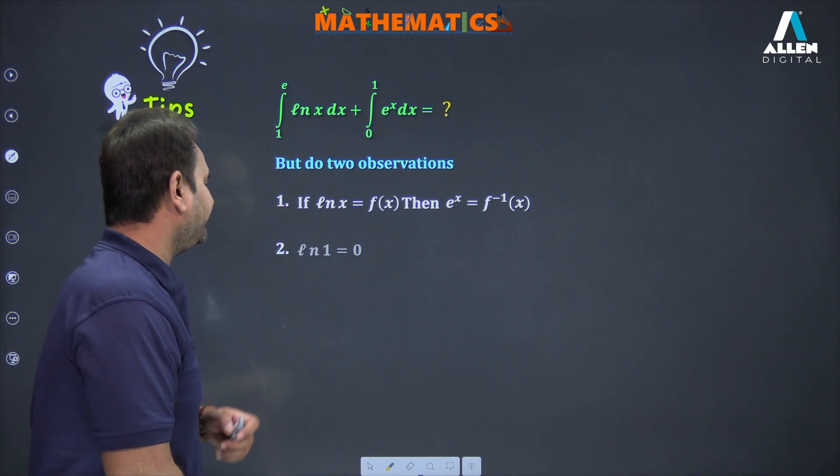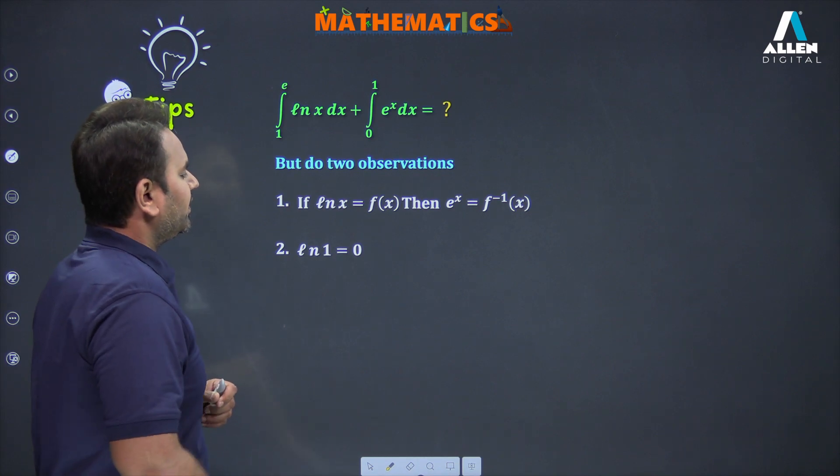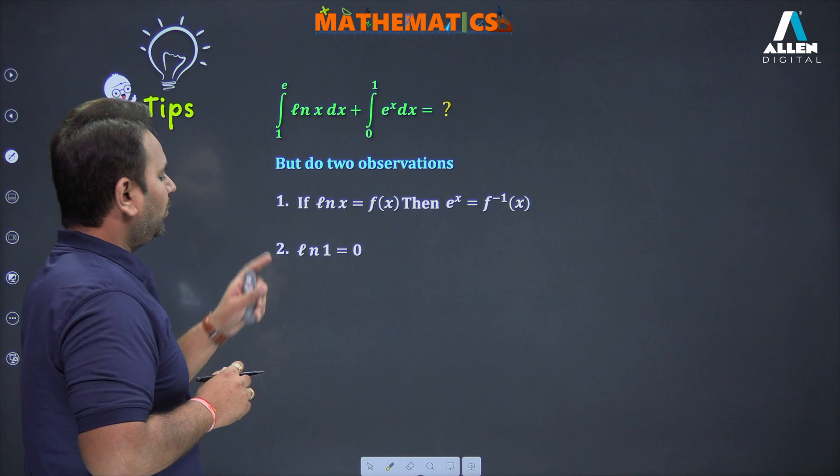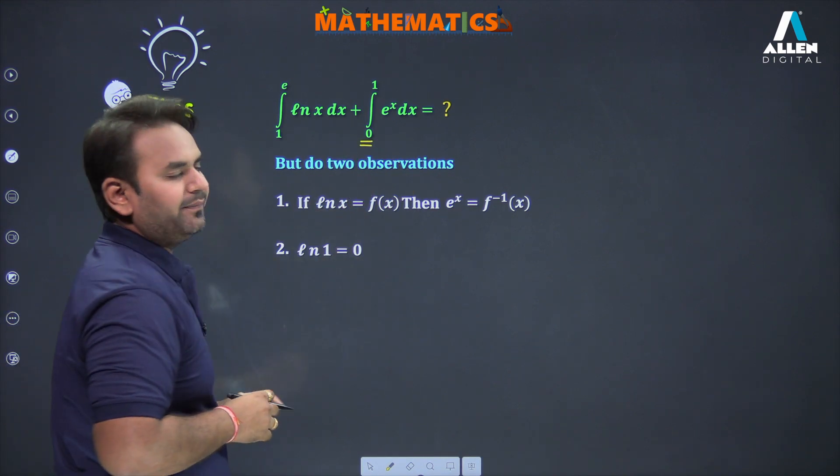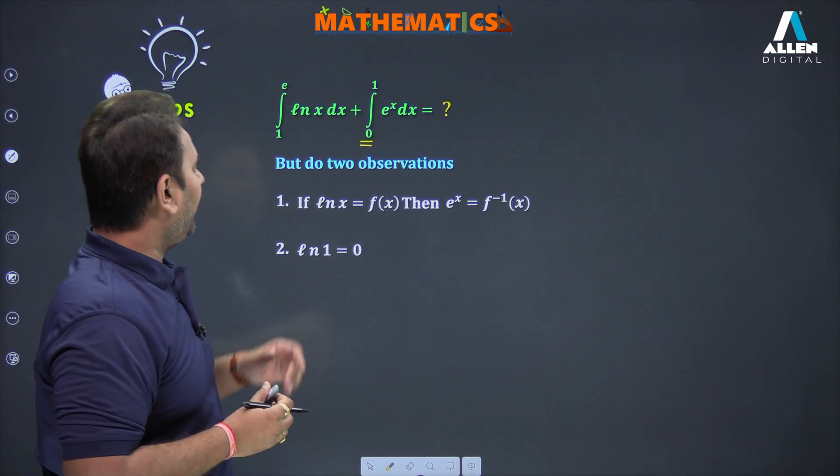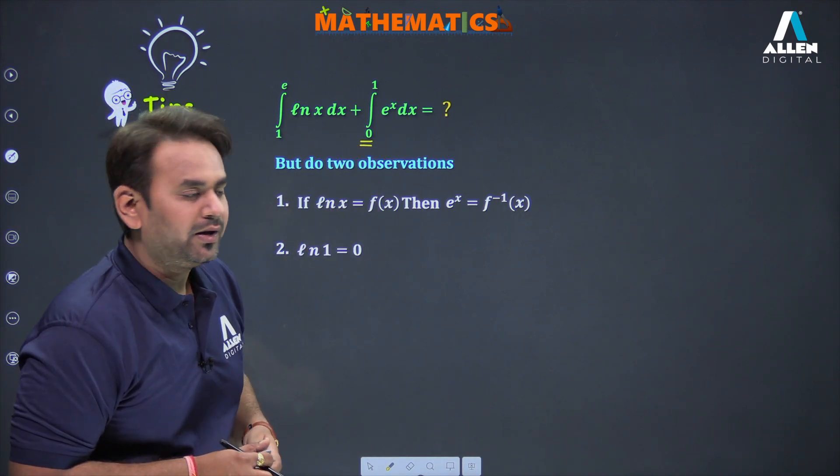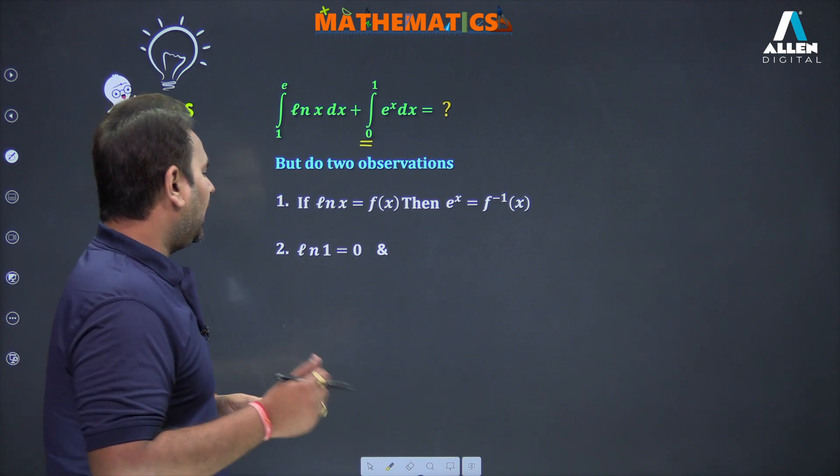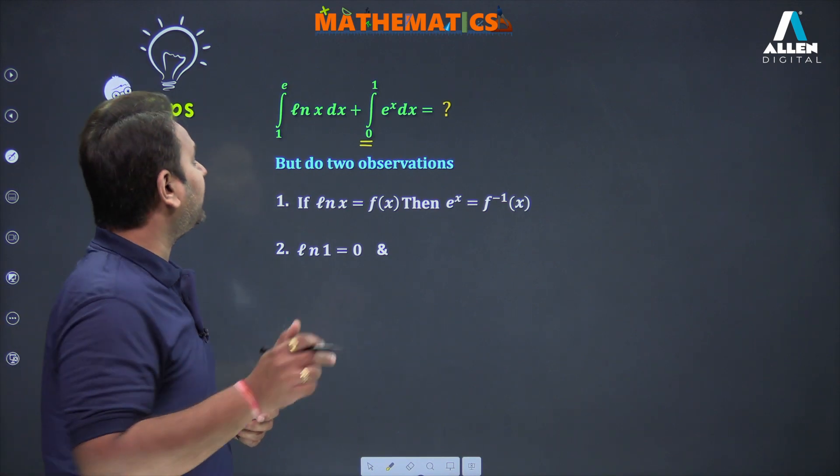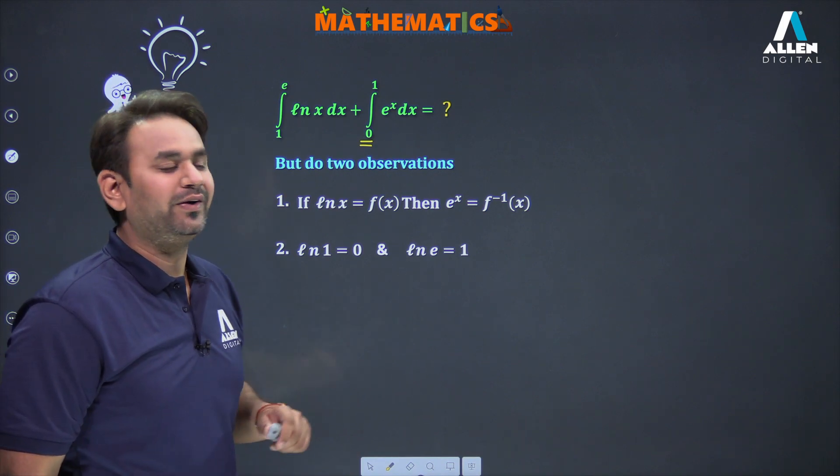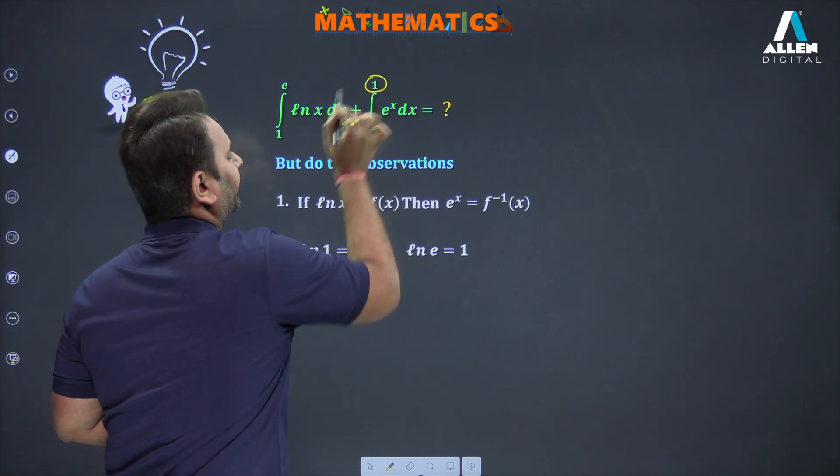The second observation: if I put x equals 1 in f(x) = ln x, I get zero, which is the lower limit here. See, I took ln x as f(x) and put the lower limit 1, so ln 1 becomes zero, which is the lower limit there. Now if I put e in ln x, I get ln e which equals 1, which is the upper limit.